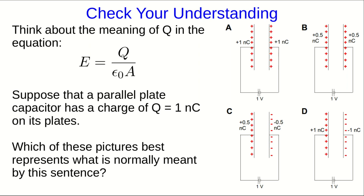In the previous part of this video lecture, I asked a question checking that you understand the definition of Q in this equation for the E field inside a parallel plate capacitor. If you look back at how I defined it, we have a charge Q on one plate and a charge negative Q on the other plate. So if Q is one nanocoulomb, then we have plus one nanocoulomb on one plate and minus one nanocoulomb on the other.